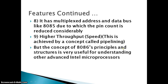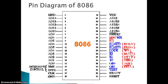The throughput is improved in the 8086 because of pipelining. Pipelining means the prefetched instructions are stored inside the microprocessor. The 8086 supports six bytes of prefetched data or instructions in its queue.